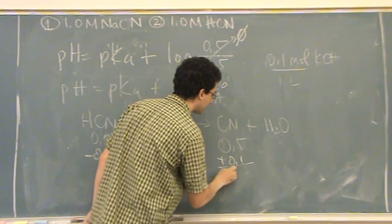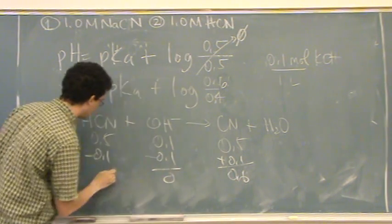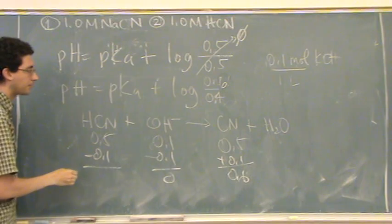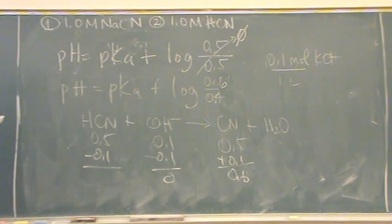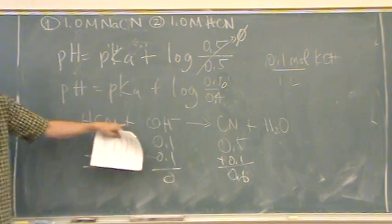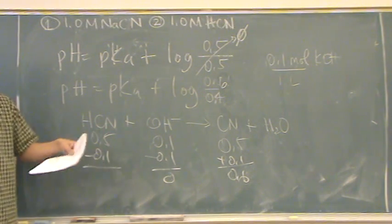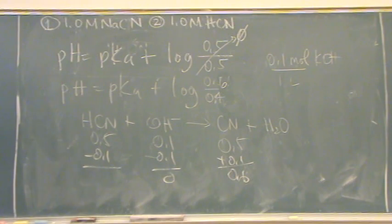How do you know to have HCN plus OH minus? Like why isn't it H2O on the left side? Because I'm not adding water. I'm adding KOH. If you read part G it says I'm adding 0.1 moles of KOH. So I've got to write the acid. If it didn't have that it would be water.